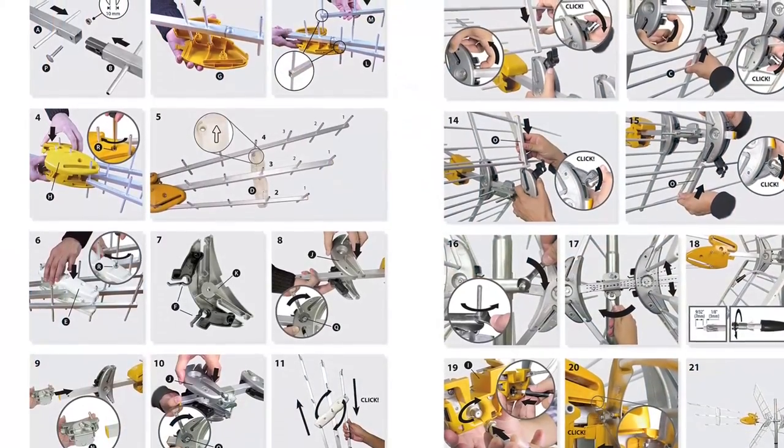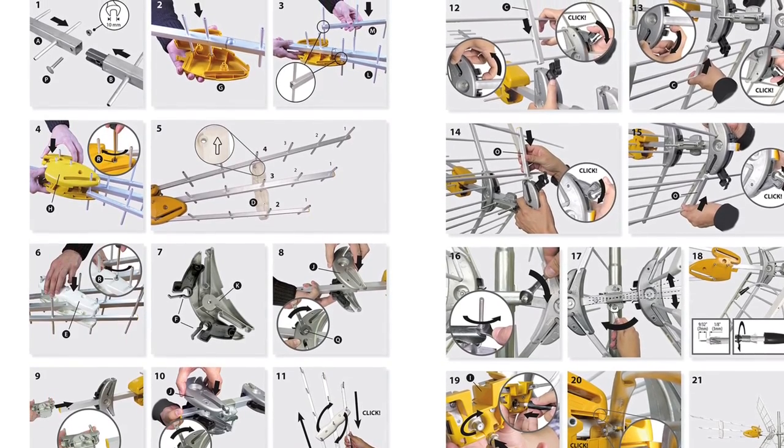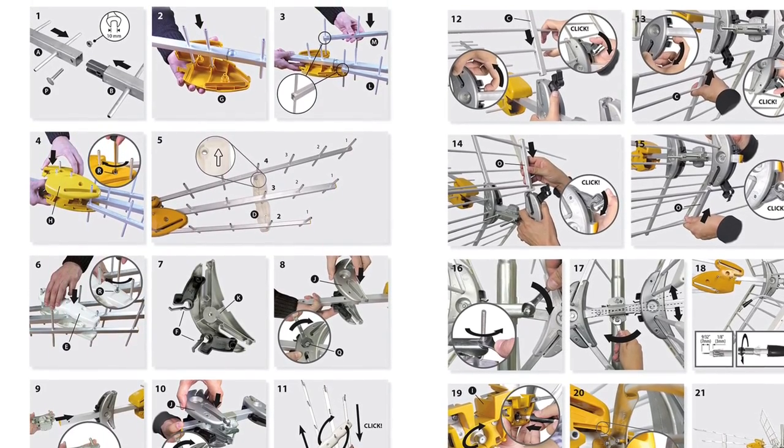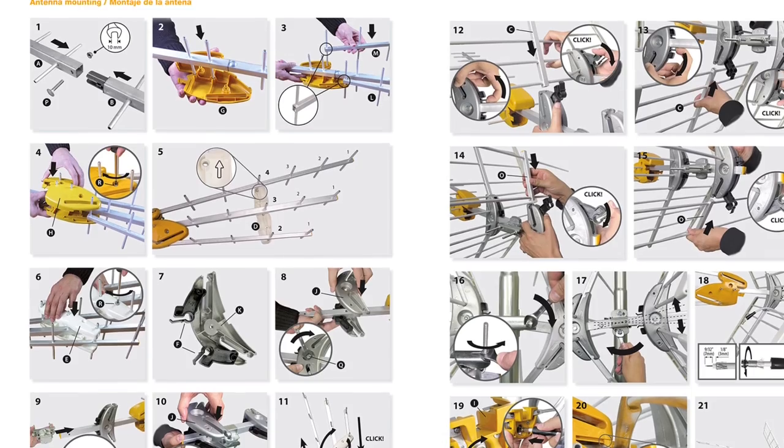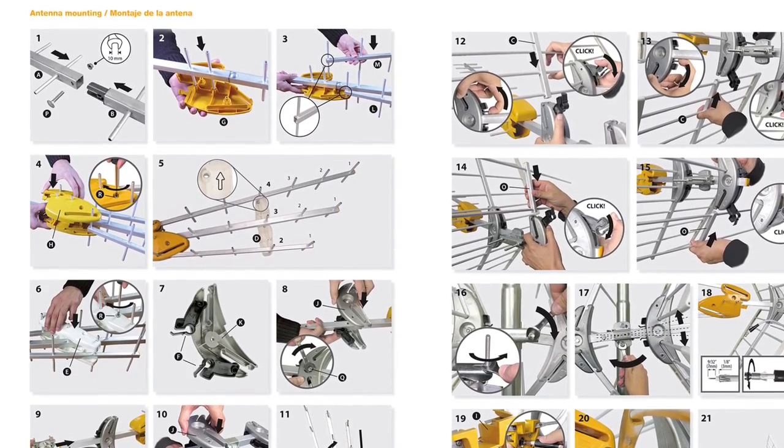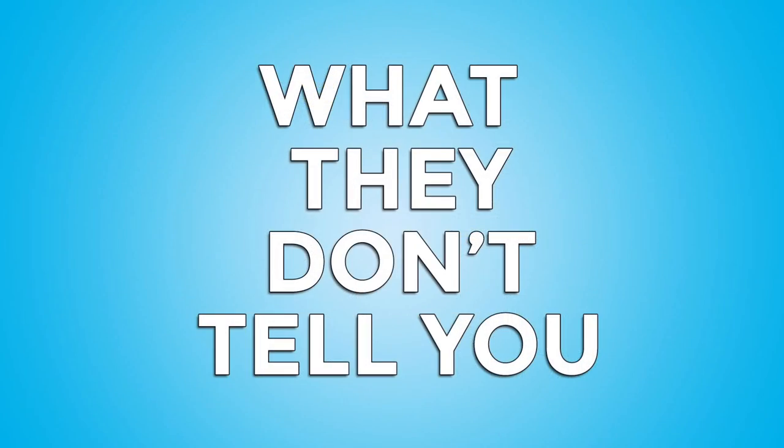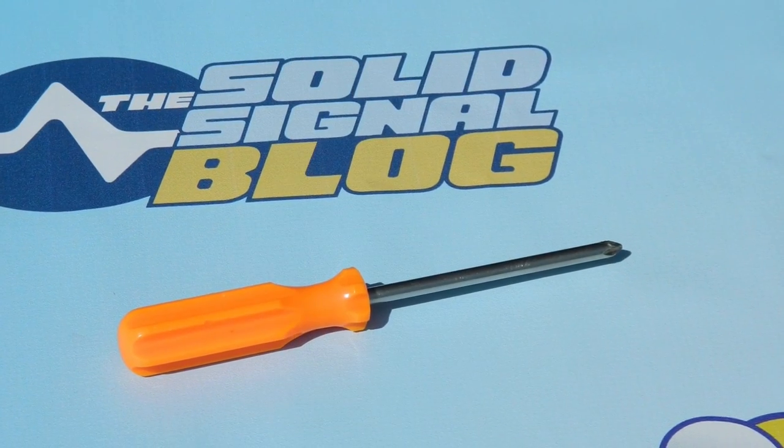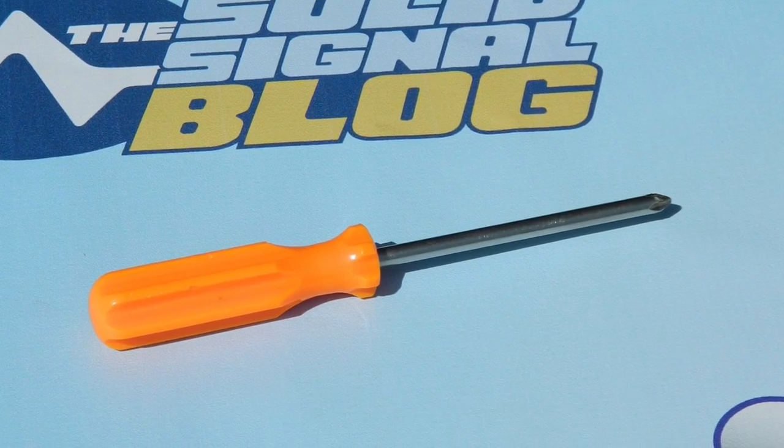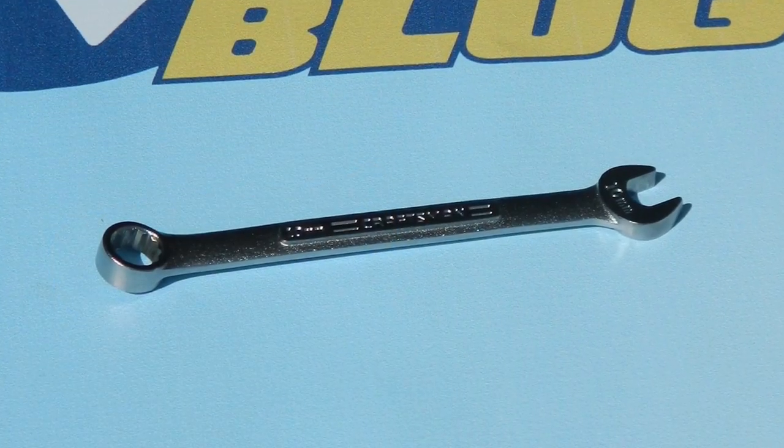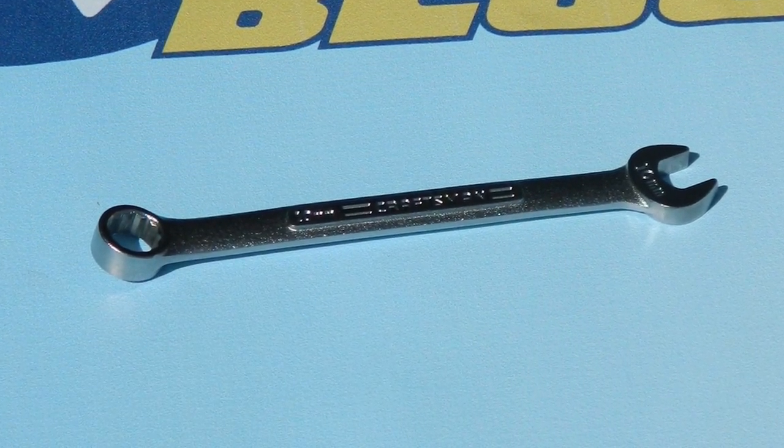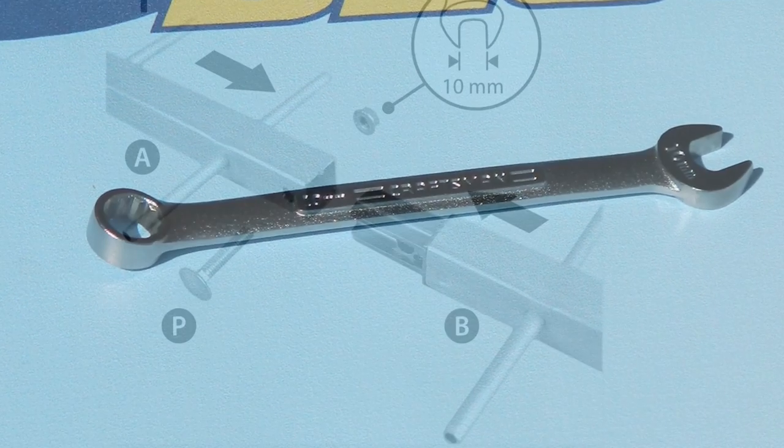You do get very comprehensive directions with this antenna, but you do have to be a bit of a wizard to understand what they're trying to tell you. That's why this video is going to come in handy. You're going to need a few tools: the antenna comes with a wrench, but you'll need a Phillips head screwdriver, and you might want your own 10 millimeter box wrench or socket.